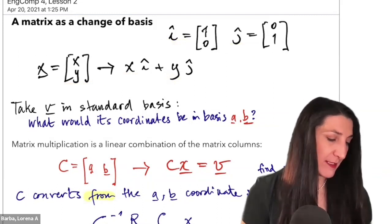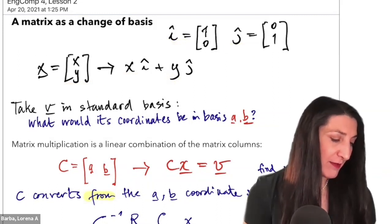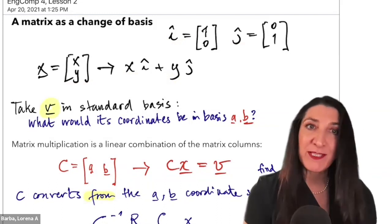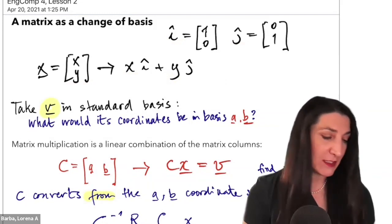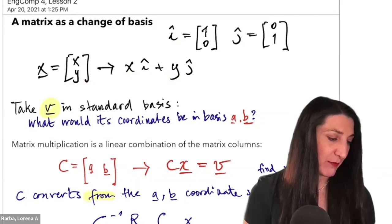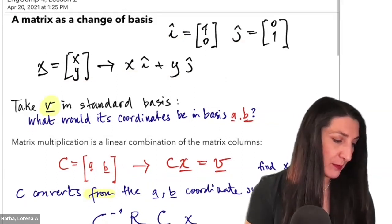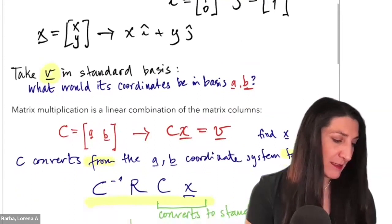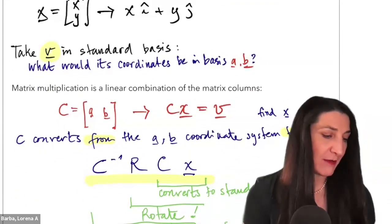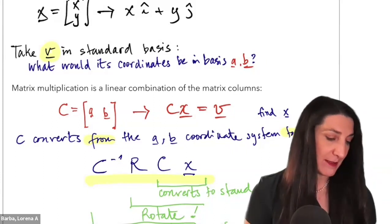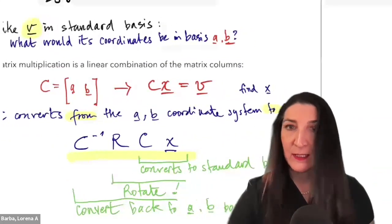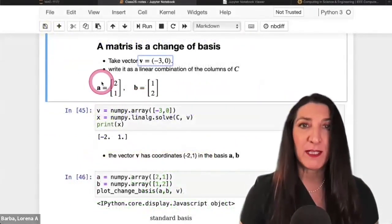The question then arises: if you have any vector v that is represented in the standard basis — so its coordinates are known in the standard basis, just like x before — what would be its coordinates if we change to another basis, say a and b? This is what we were seeing in this part of the lesson.